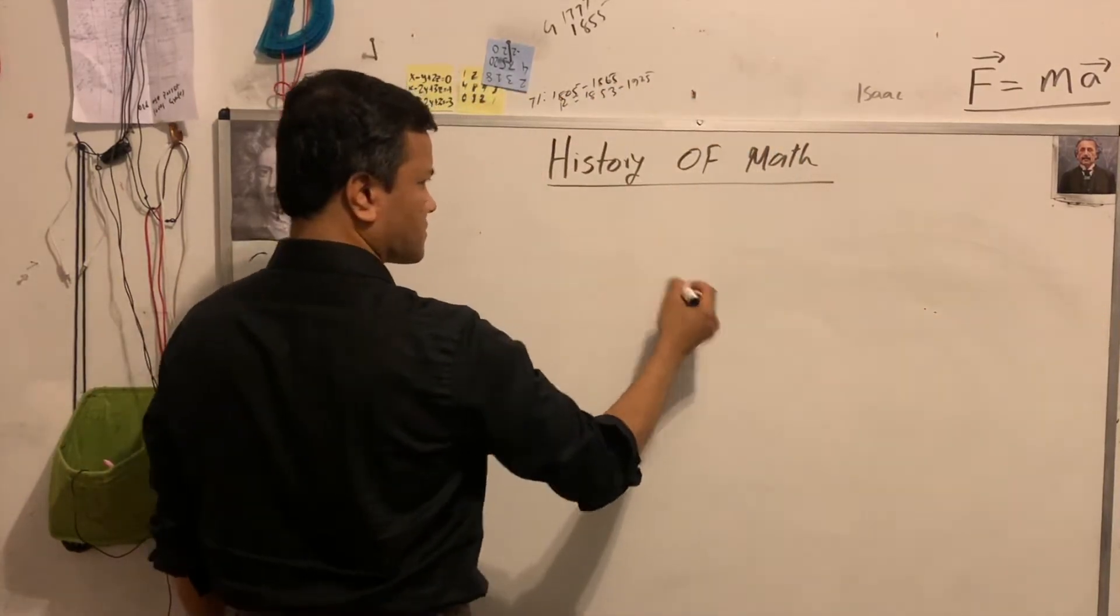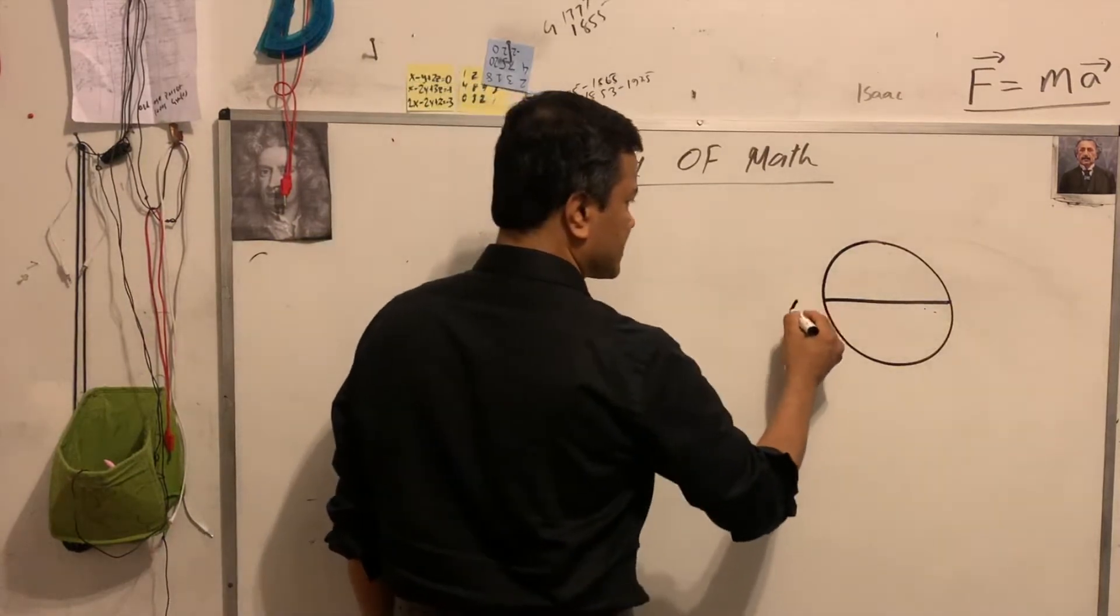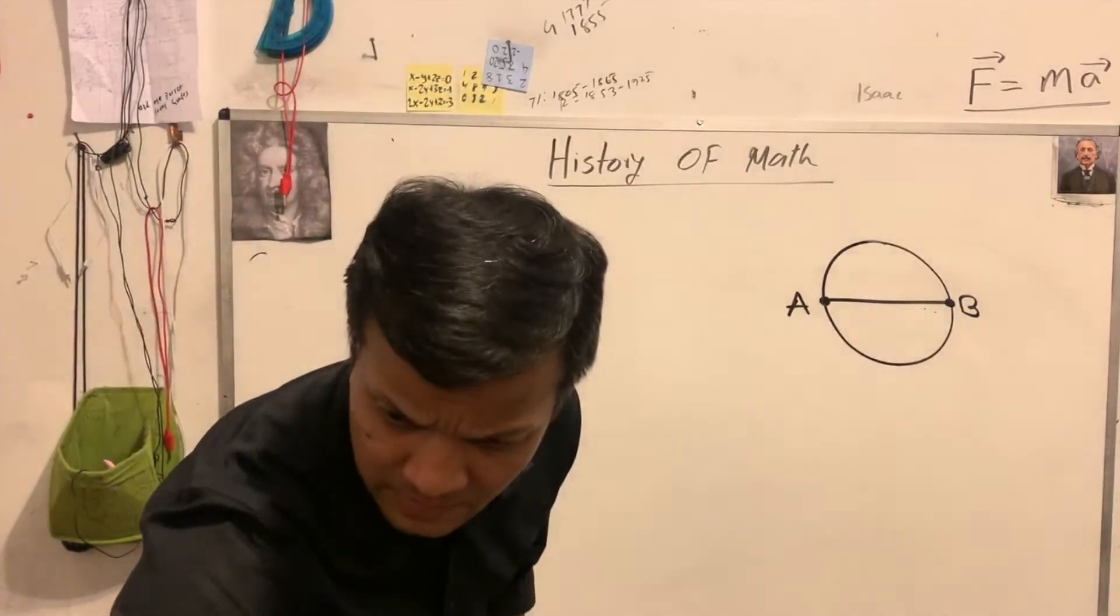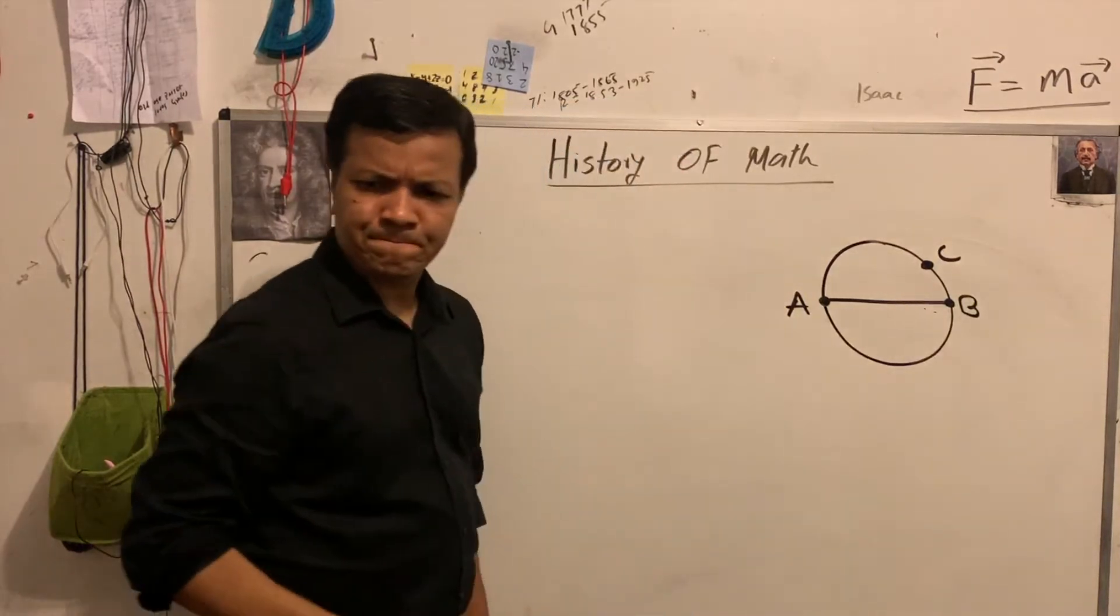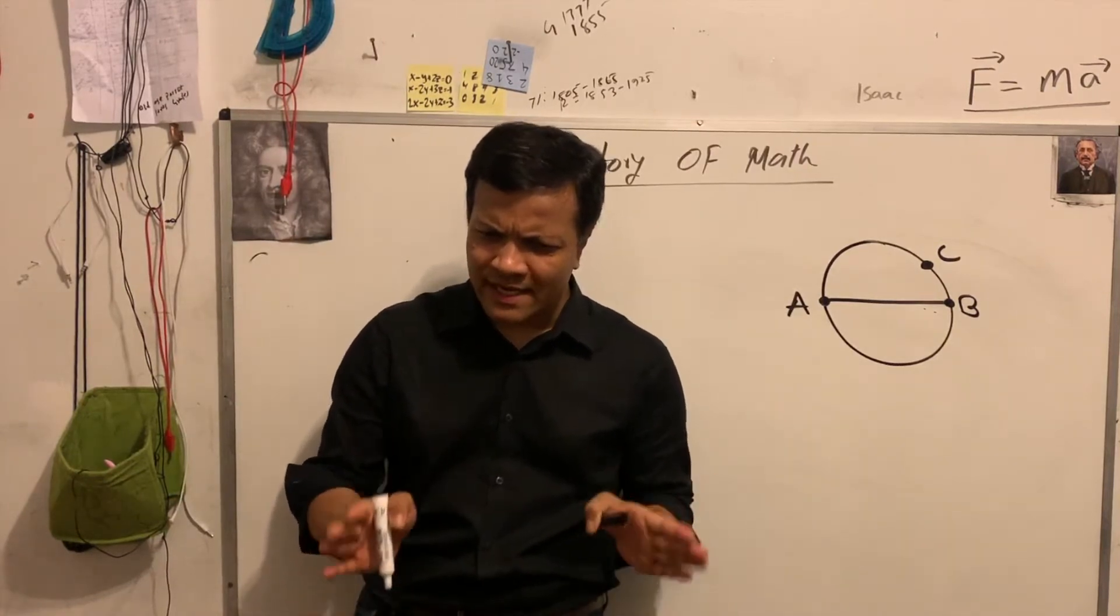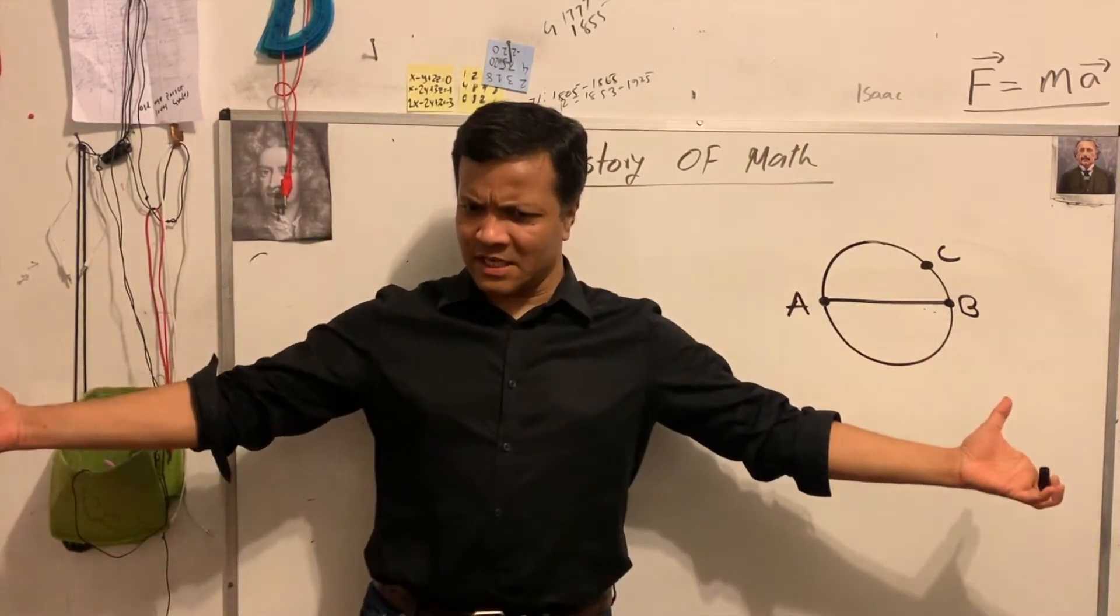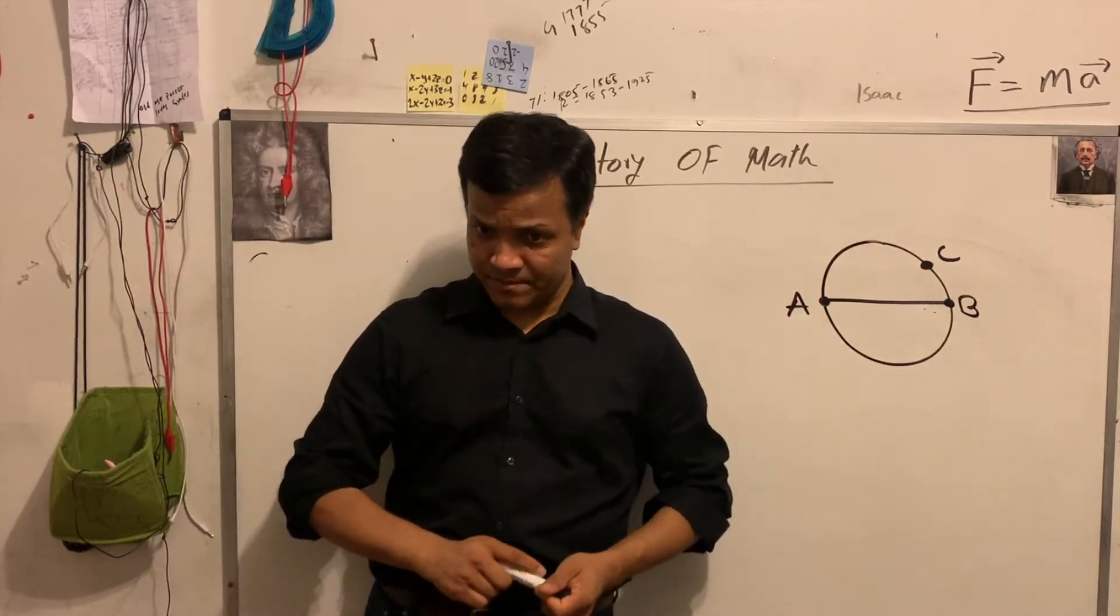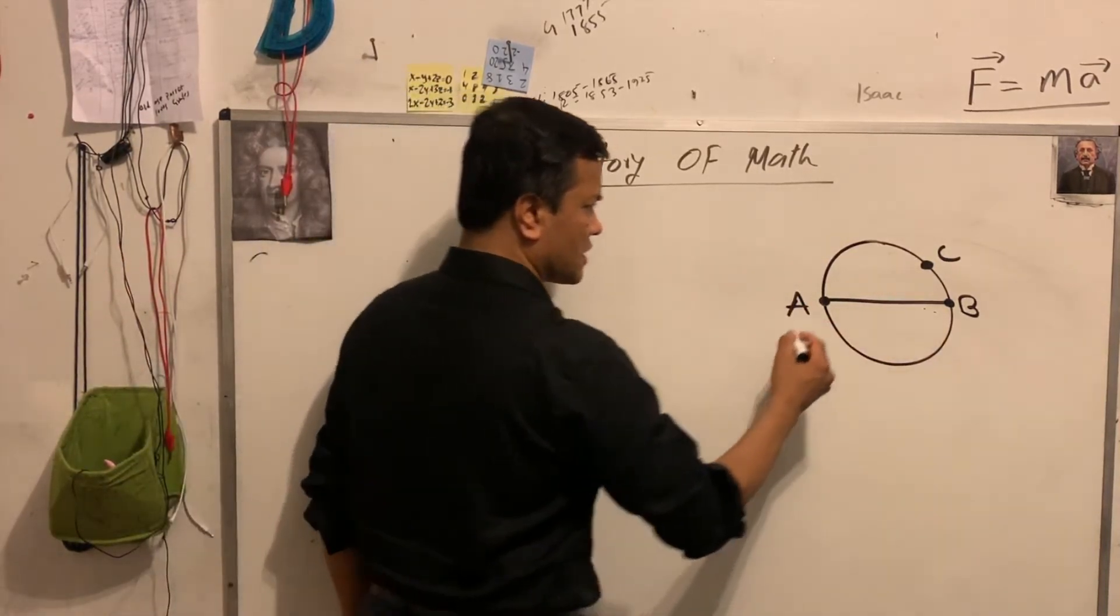He said take a circle. Draw a diameter on the circle. Call it A and B. This two points, one point call A, one point call B. Draw another point on the circle. Call C. And then you connect this three dots and you get a right triangle. You get a right angle. So what does that mean? A student called it inscribed angles. It's called Inscribed Angle Theorem. So Inscribed Angle or Right Angle, Inscribed Angle or Right Triangle. So let's see what that means.